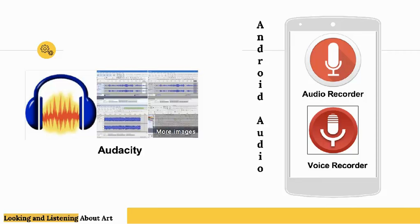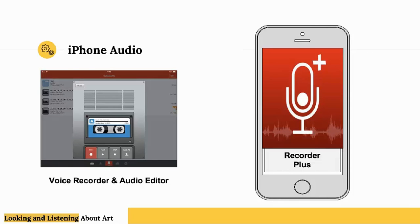Understanding that we all use the most readily available recording device — our phones — there are numerous apps to select from. Audio Recorder by Sony Mobile Communications is a simple, straightforward app for your smartphone or tablet; you can record, pause, edit, and export in a WAV format. Voice Recorder Free or its enhanced versions are minimally priced, work well for smartphones, and can export in WAV format. For the iPhone, Voice Recorder and Audio Editor has a vintage look with the ability to edit and upload to cloud services. Recorder Plus provides a variety of export formats along with the ability to upload to cloud services of your choice.